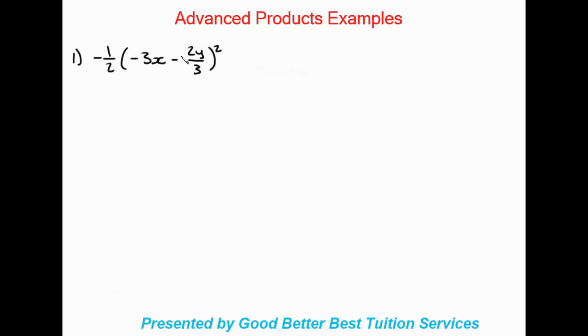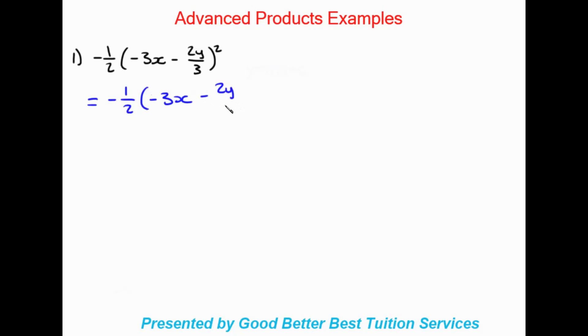Here we have negative one half times a binomial that is being squared. Generally when we see a monomial times a binomial squared, we want to work on those brackets first. Since the brackets are being squared, we need to square them — so we'll keep the negative half and write the brackets twice: negative 3x minus 2y over 3, times negative 3x minus 2y over 3.